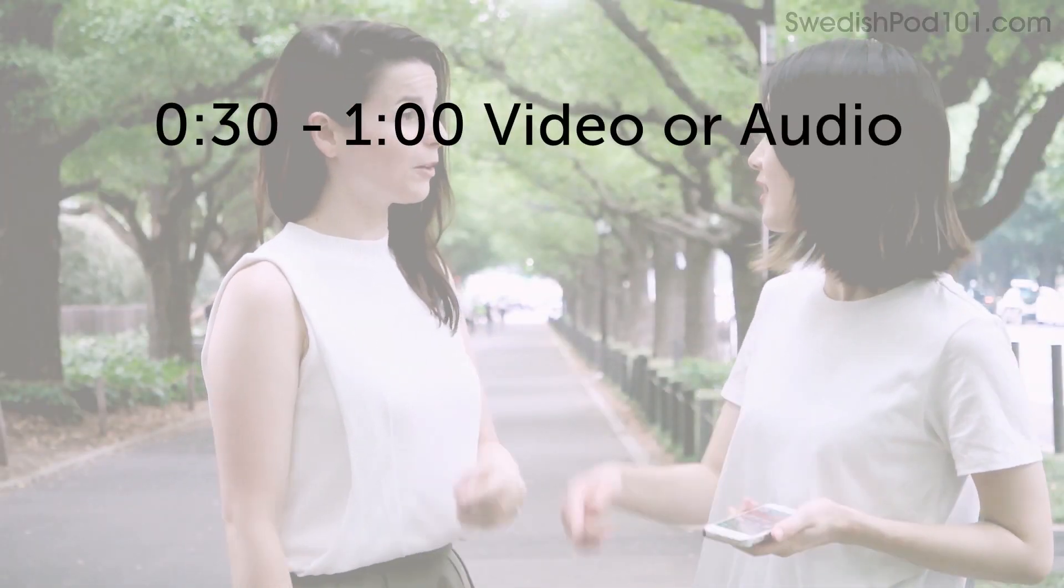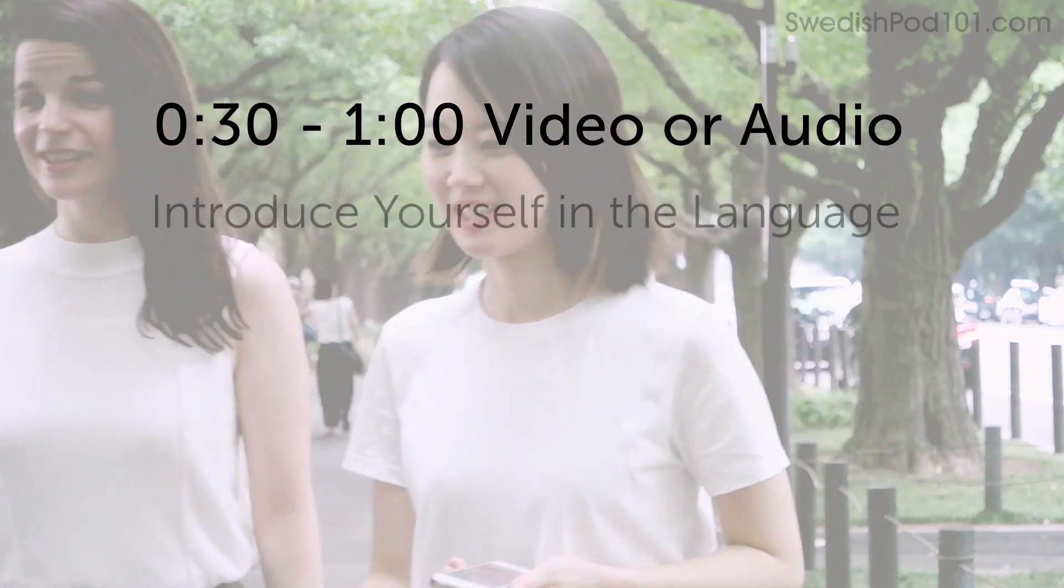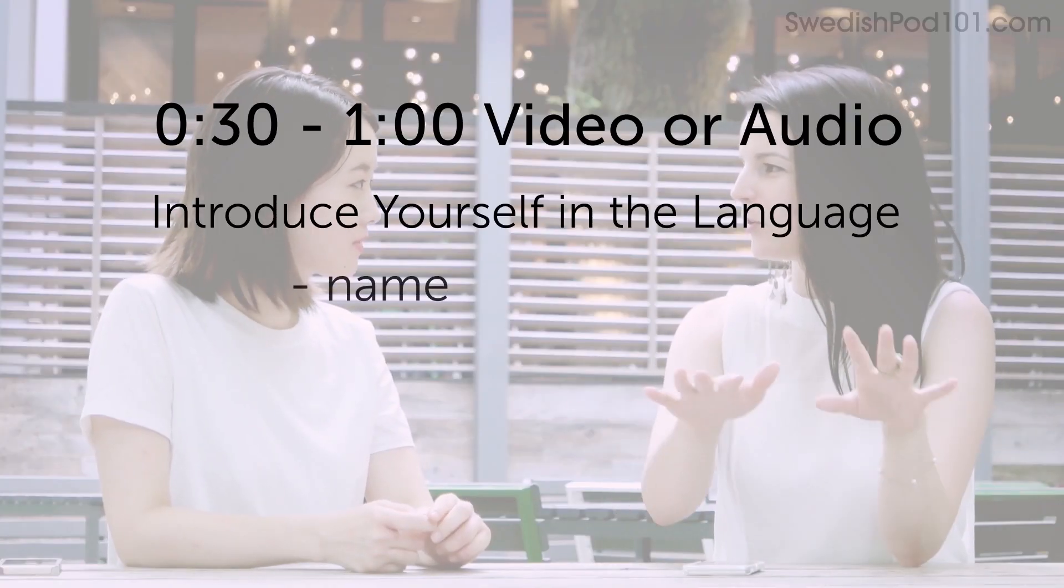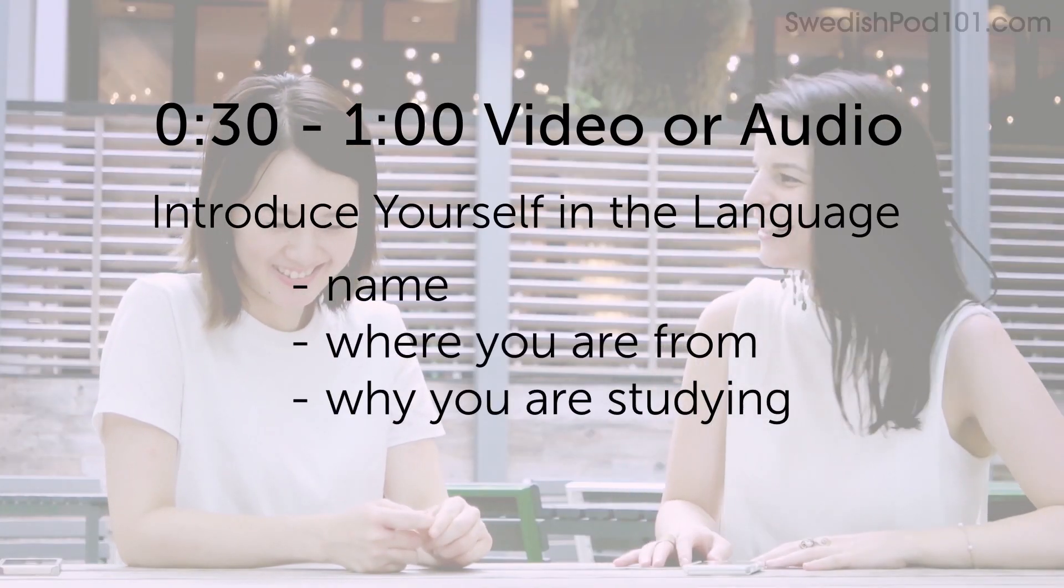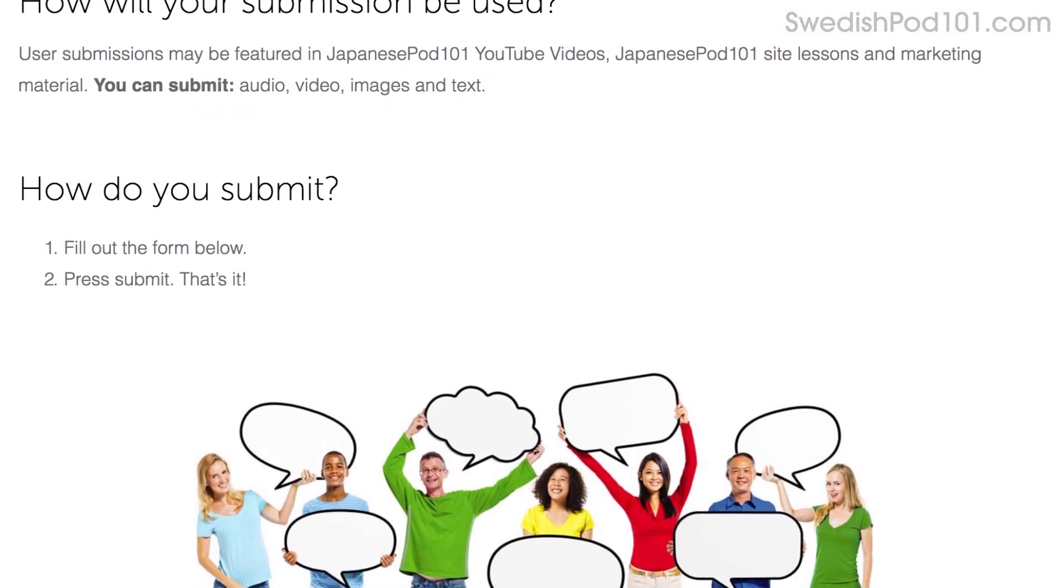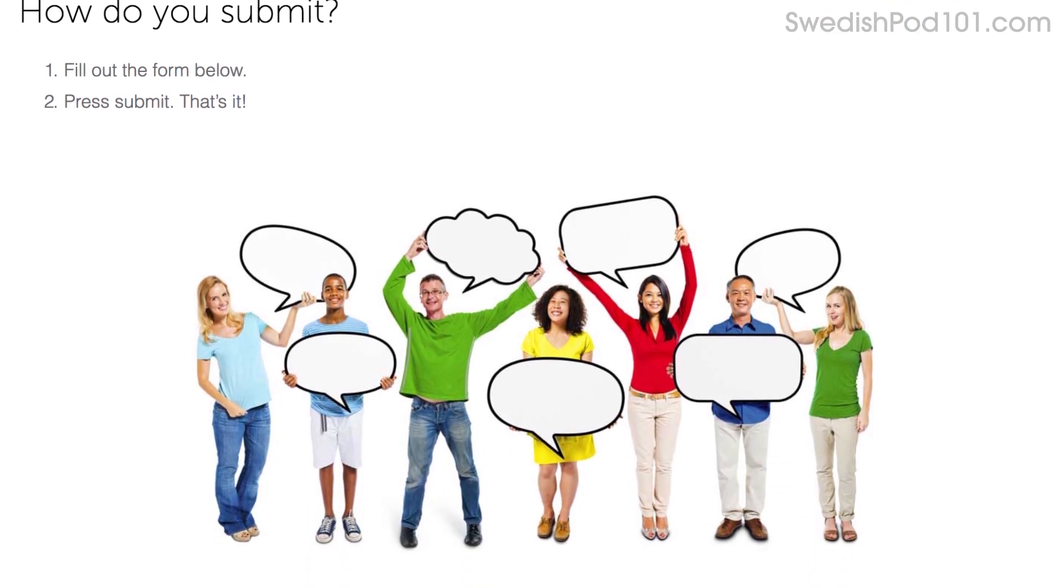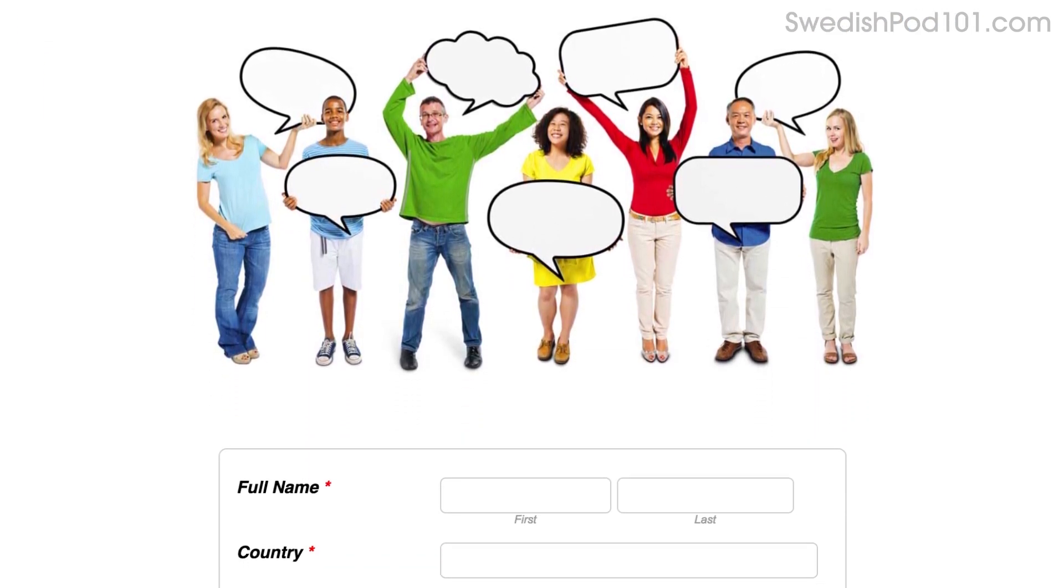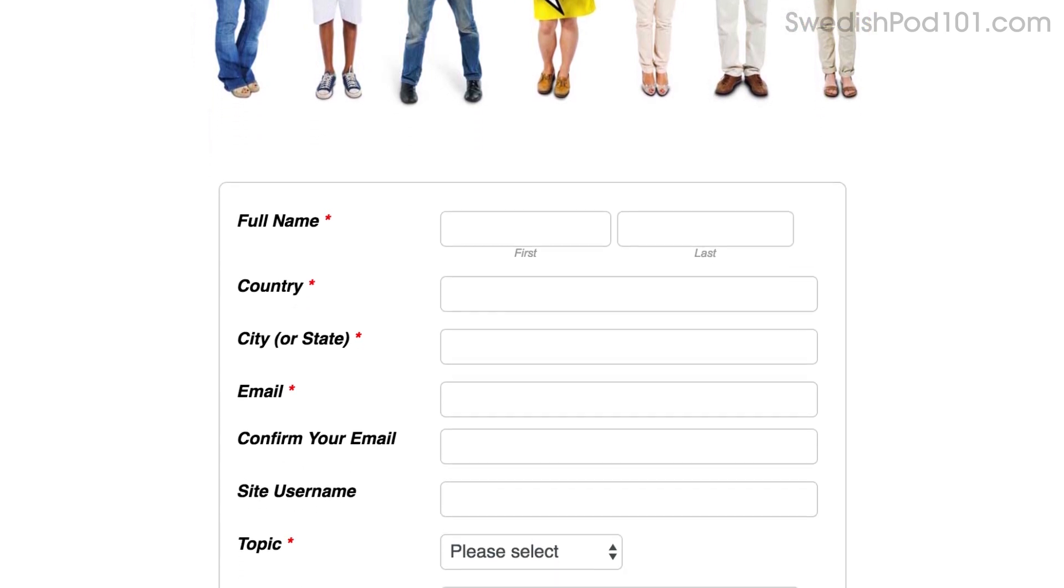Record a 30-second to one-minute audio or video clip. Introduce yourself in the language. Share your name, where you're from, and why you're studying this language. And, you'll win a three-month Premium Plus subscription. To submit, click on the link in the description. Sign up for your free lifetime account. Then, fill out the form. Attach the audio or video file. And, press submit. We may feature you in next month's episode, so a lot of learners will see you and your progress, and will hopefully get inspired to improve and master the language. To submit a recording, click the link in the description and follow the instructions on the page.